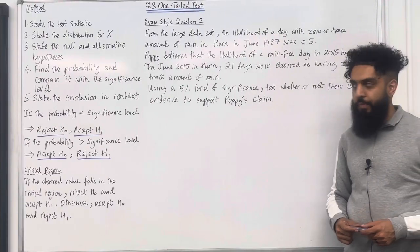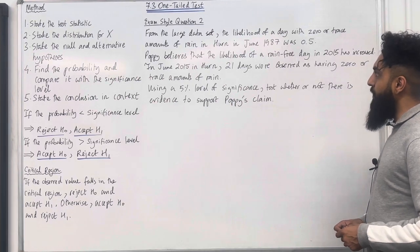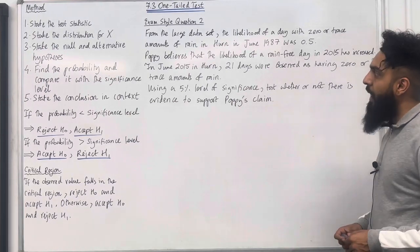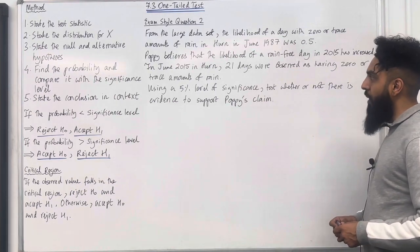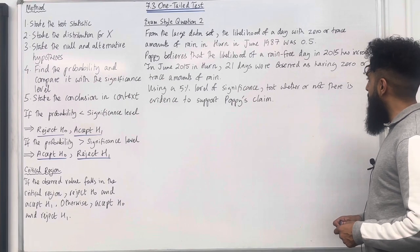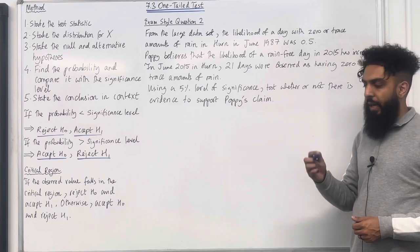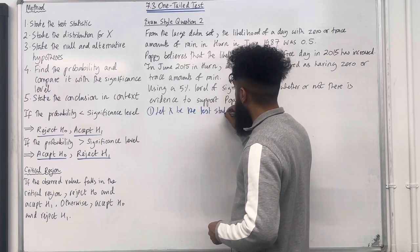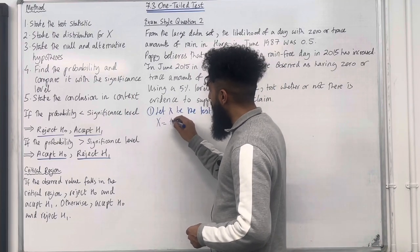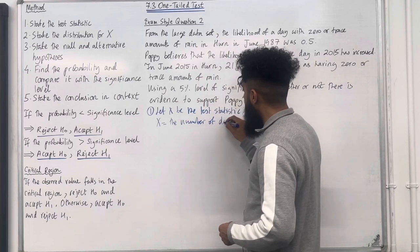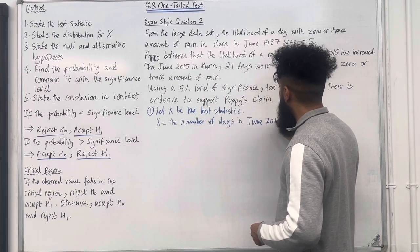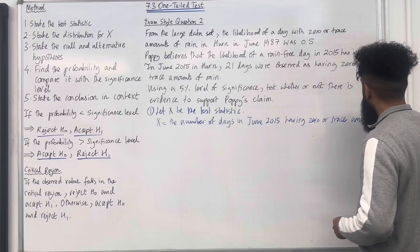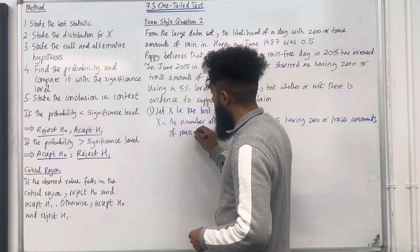Moving on to exam-style question 2. From the large data set, the likelihood of a day with 0 or trace amounts of rain in Hurn in June 1987 was 0.5. Poppy believes that the likelihood of a rain-free day in 2015 has increased. In June 2015 in Hurn, 21 days were observed as having 0 or trace amounts of rain. Let X be the test statistic — X is the number of days in June 2015 having 0 or trace amounts of rain.